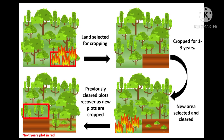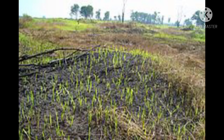As you can see in the picture, first they used to select a land, crop it for one to three years, and then a new area was selected and cleared for farming. The previous cleared plot was left to recover as new plots were cropped. The concept of shifting agriculture will be more clear to you by watching this video, so let's watch it.